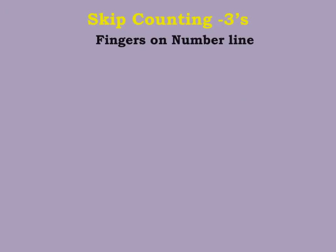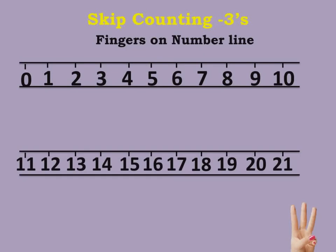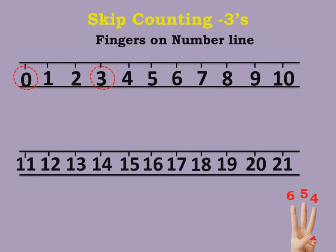Now let's see how to do Skip Counting by Threes using fingers on the number line. The number line goes from 0 to 21. Whenever we do Skip Counting in threes with fingers, open three fingers as shown. Starting on number 0, open three fingers and count 1, 2, 3 — so the next number is 3. After 3, count 4, 5, 6 — so you will be on number 6.